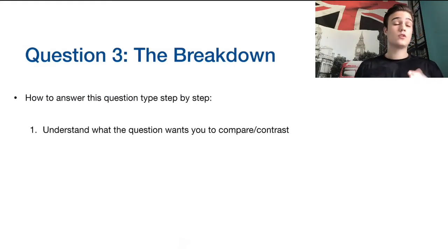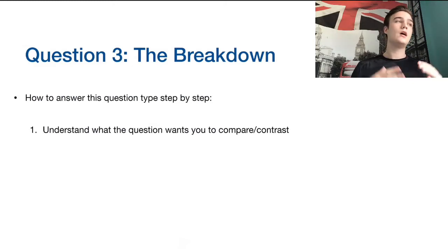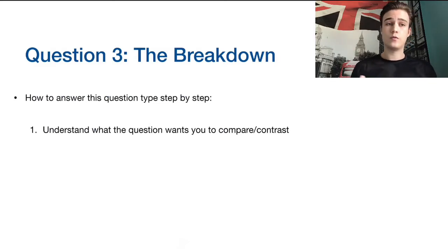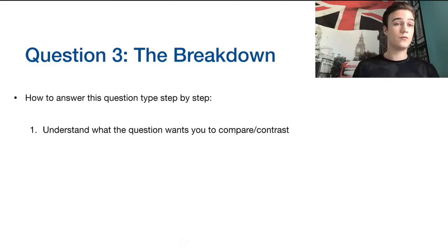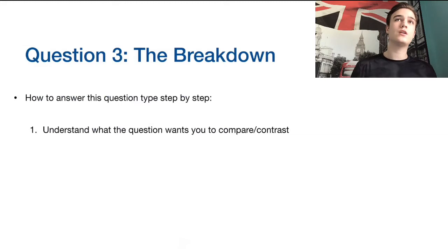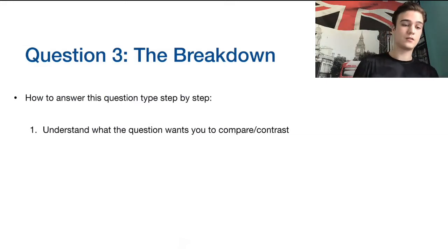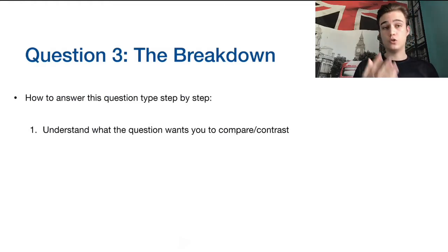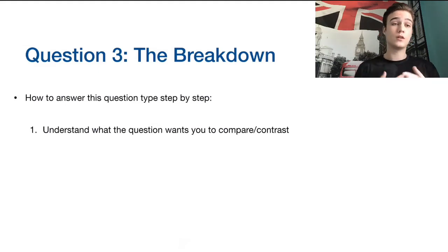The first thing you have to do to score high is understand what the question wants you to compare and contrast. This is important because you get four sources in paper one and every source gives quite a lot of information. However, all the questions — one, two, and three — ask you about very specific things. You should not be focusing on comparing ideas they don't want you to compare. The IB's criteria is very specific: if they ask you to do one thing and you do just that, you will score full marks.